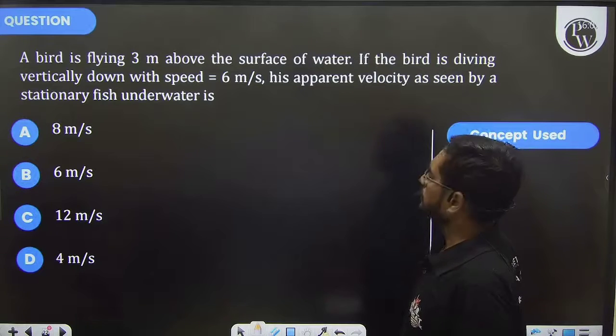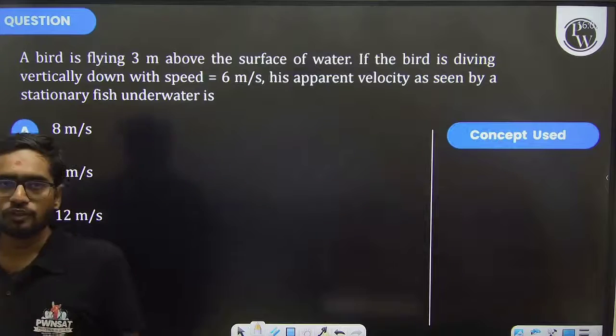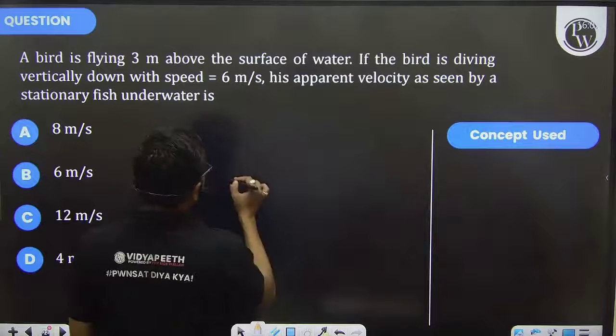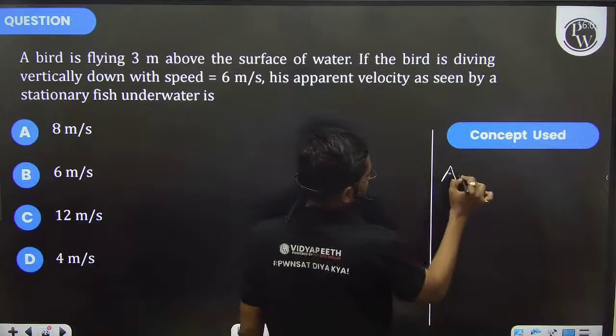What is his apparent velocity as seen by a stationary fish? Again, the same concept of apparent depth.